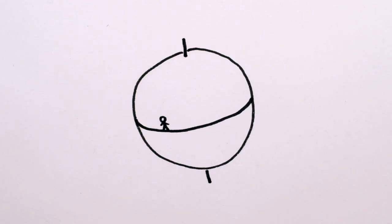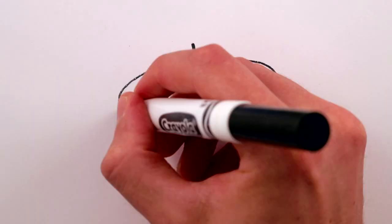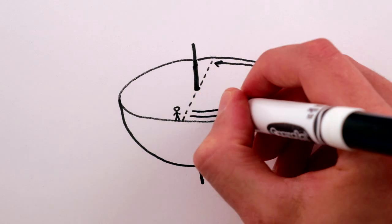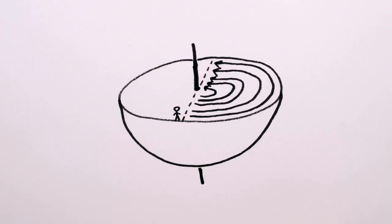At the equator, the earth, and you on it, is rotating eastwards at 1600 km per hour. As you go deeper, the bits of earth around you are still spinning around once per day, but they don't have as far to travel, so they're going at slower and slower speeds.